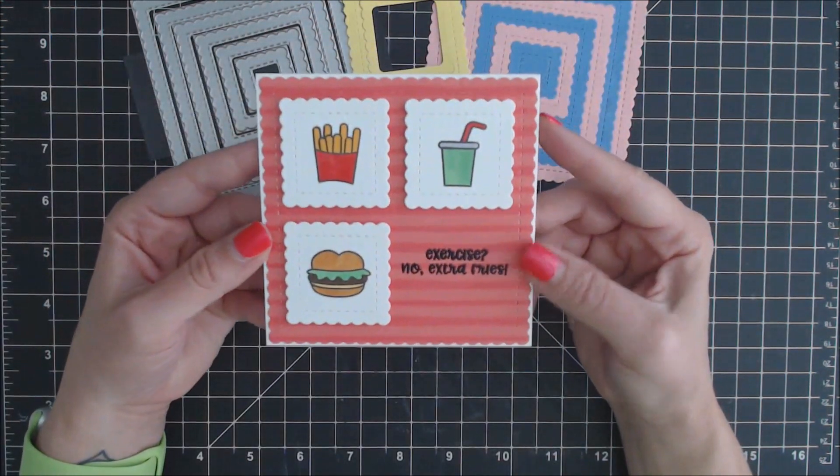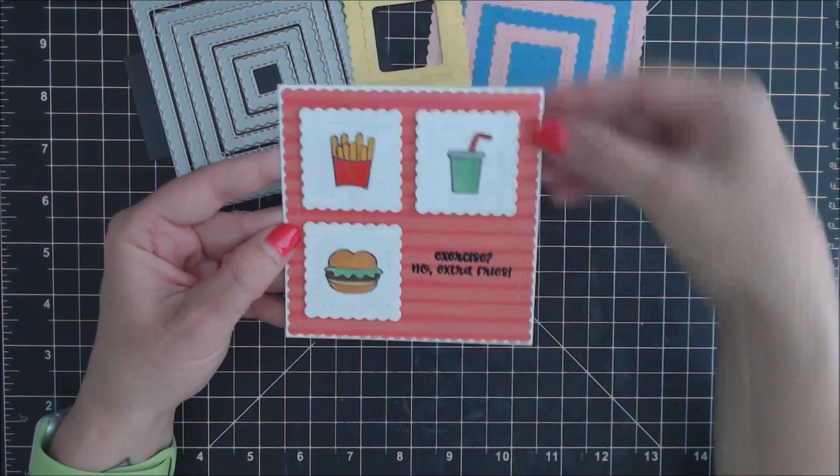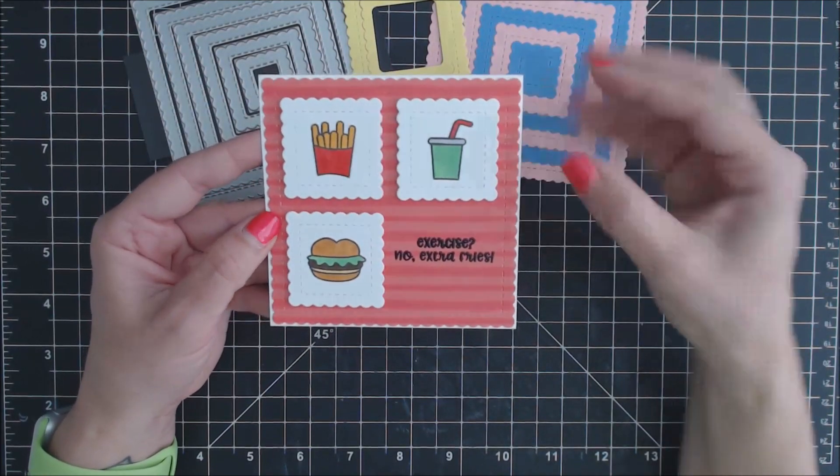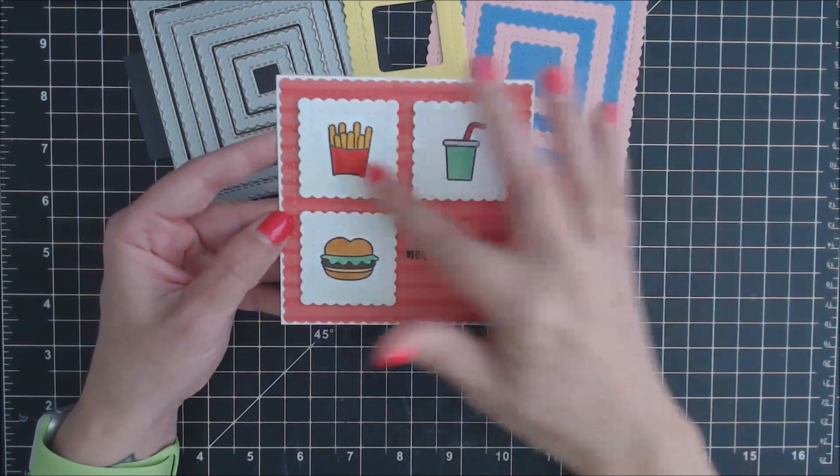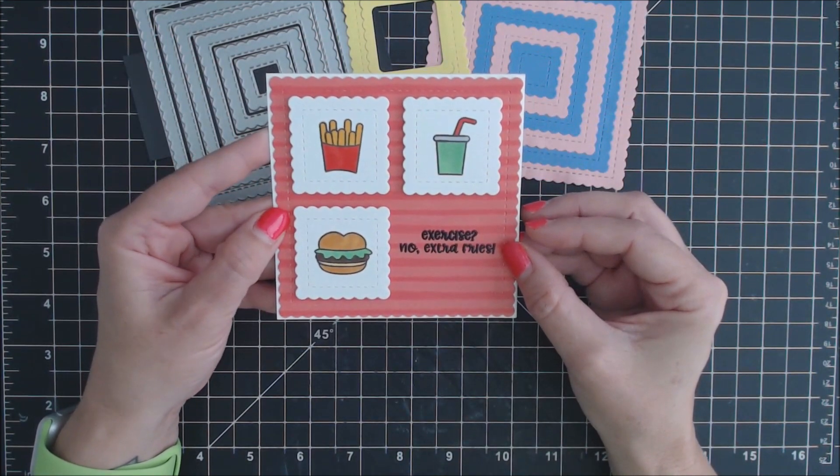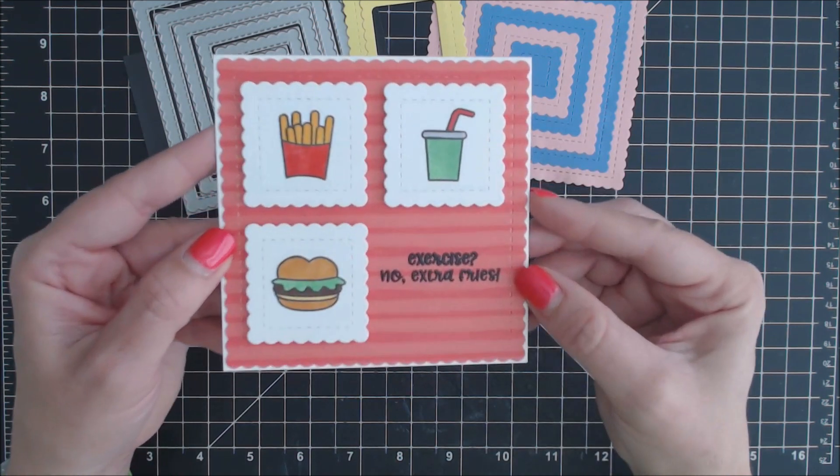For this one, the card I created, I used the largest die and set it on a four and a half by four and a quarter by four and a quarter square card. Then I used a smaller one, stamped some images from the Honey Snacks set from Cat Scrappiness and then heat embossed my sentiment on there for a cute card.